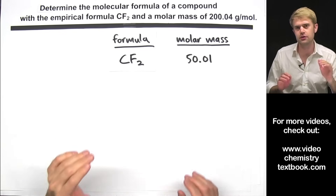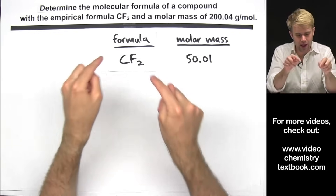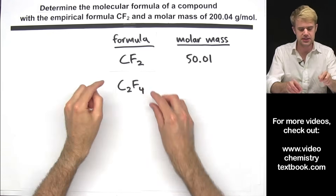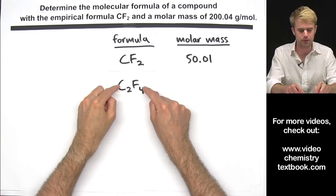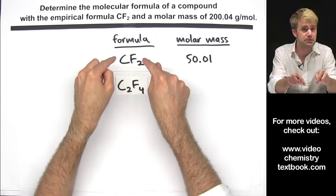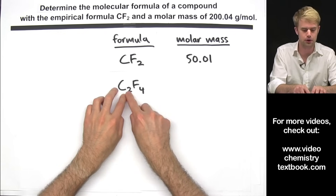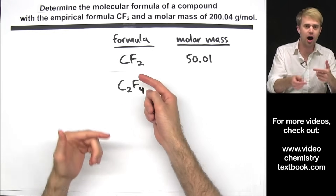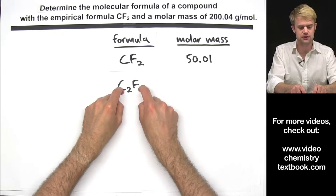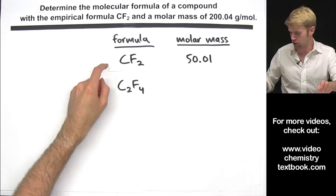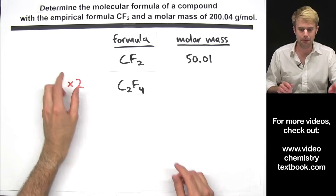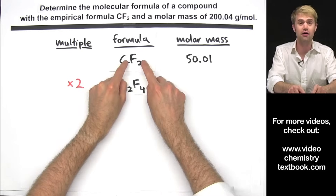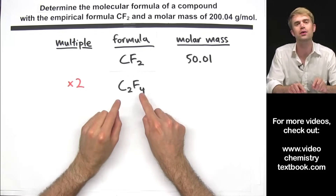There are a number of different molecular formulas that all have CF2 as their empirical formula. For example, C2F4 is a molecular formula that has CF2 as its empirical formula. If we took both of these numbers and divided them by 2, we'd end up with CF2. Going the other way, we can say that we got C2F4 by taking the empirical formula and multiplying it by 2 — this formula is a multiple of the empirical formula.